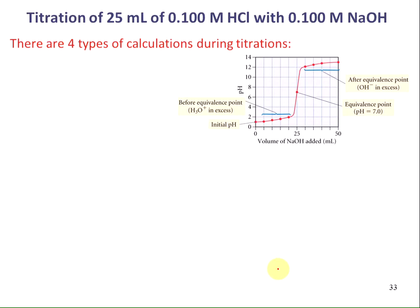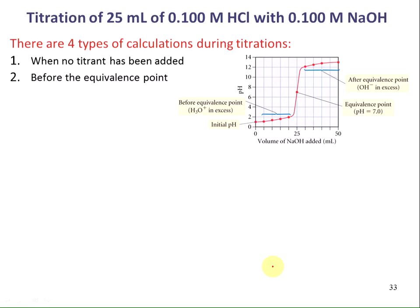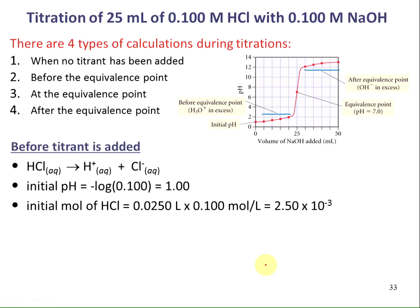We're going to titrate 25 mL of 0.1 molar HCl with 0.1 molar sodium hydroxide. There are four types of calculations during the titration. Type 1 is when no titrant has been added — only 25 mL of 0.1 molar HCl. Type 2 is before the equivalence point, where some HCl has been neutralized. Type 3 is at the equivalence point. And type 4 is after the equivalence point, when there is an excess of the strong base.